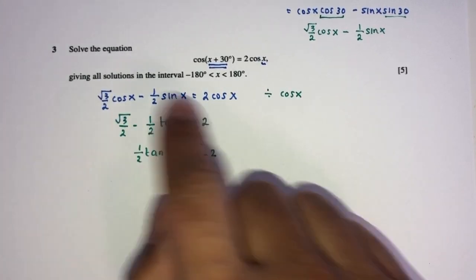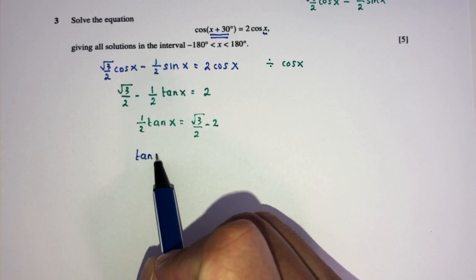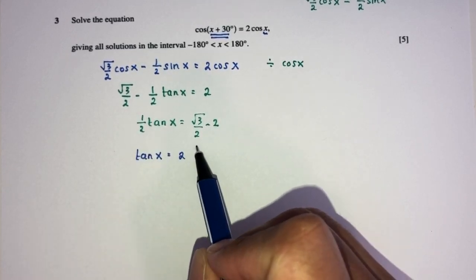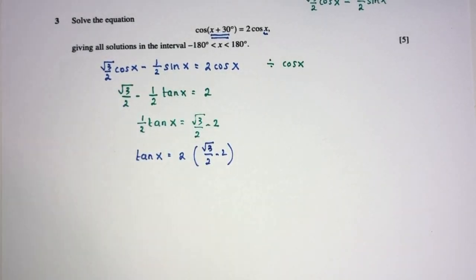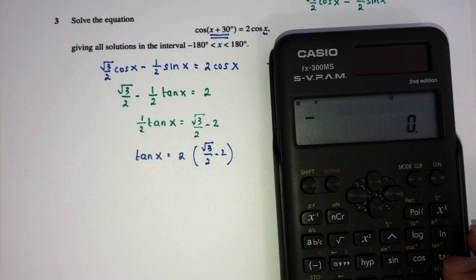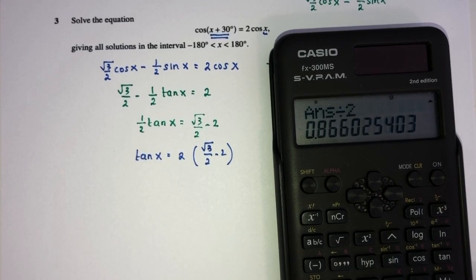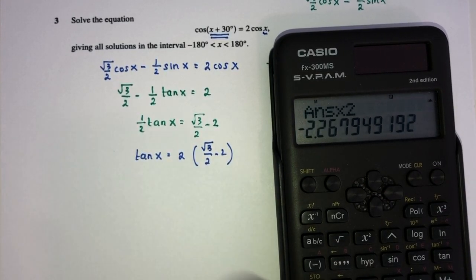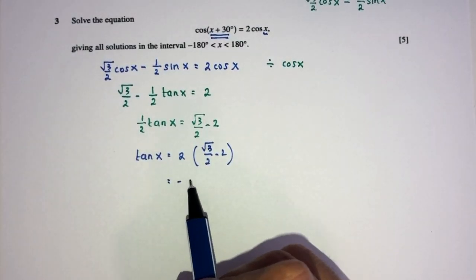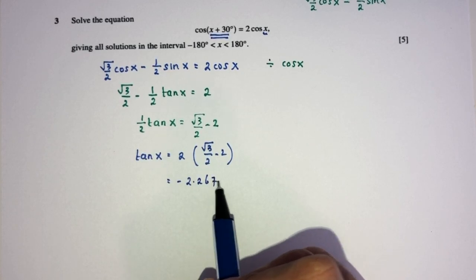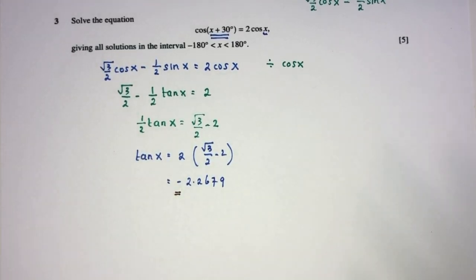Right? So, this over here, this over here, you have this. Now, finally, tan(x) is what? It is simply the value of 2 times this whole thing. Great. Now, let's find the value of that. That should be root, apologize, √3 divided by 2 minus 2 times 2. That would be minus 2.2679. That is minus 2.2679. So, clearly, tan is a negative value. So, we have to proceed accordingly.